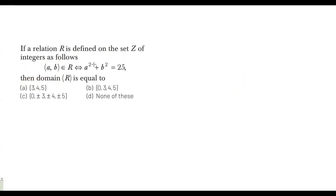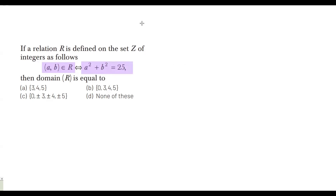The next question: R is a relation (not a real number) defined on set Z, the set of integers. The ordered pair (a, b) belongs to R if a² + b² = 25. For questions like this, we use hit-and-trial — we think of two integers whose squares sum to 25.